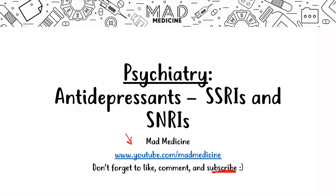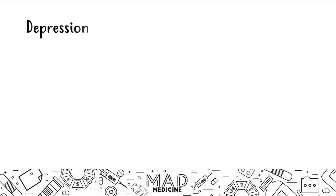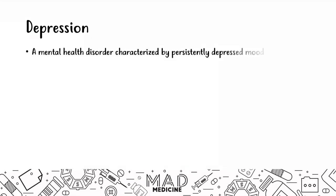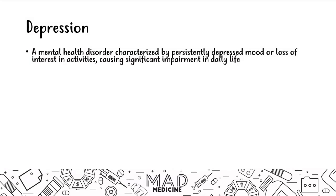Before we talk about the drugs, we're going to talk about depression — aka the big sad. The big sad is a mental health disorder characterized by a persistently down mood where people have a loss of interest in their activities. This usually causes significant impairment in their day-to-day life. You probably know someone who has depression, and if you have, you definitely know that it causes significant impairment.